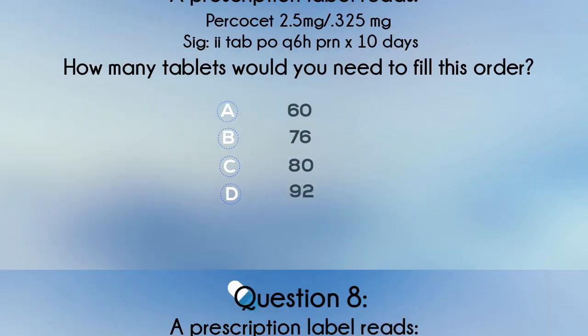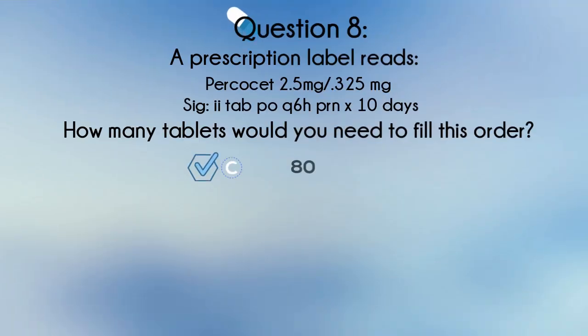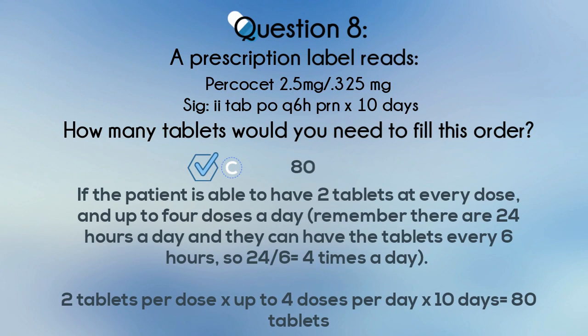The correct answer is C: 80. If the patient is able to have two tablets at every dose and up to four doses a day — there are 24 hours a day and they can have tablets every six hours, so 24 divided by 6 is four times a day — 2 tablets per dose times up to 4 doses per day times 10 days equals 80 tablets.